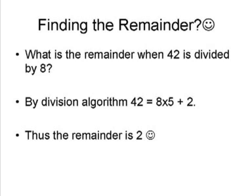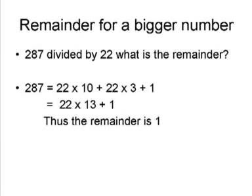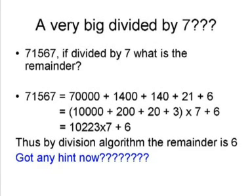You can see another example where 287 is divided by 22. Now listen carefully: 287 can be expressed as 220 + 66 + 1. 220 is 22 × 10, and 66 is 22 × 3, so it's 22 × 13 + 1. Thus the remainder is 1. Are you getting closer to the clue?